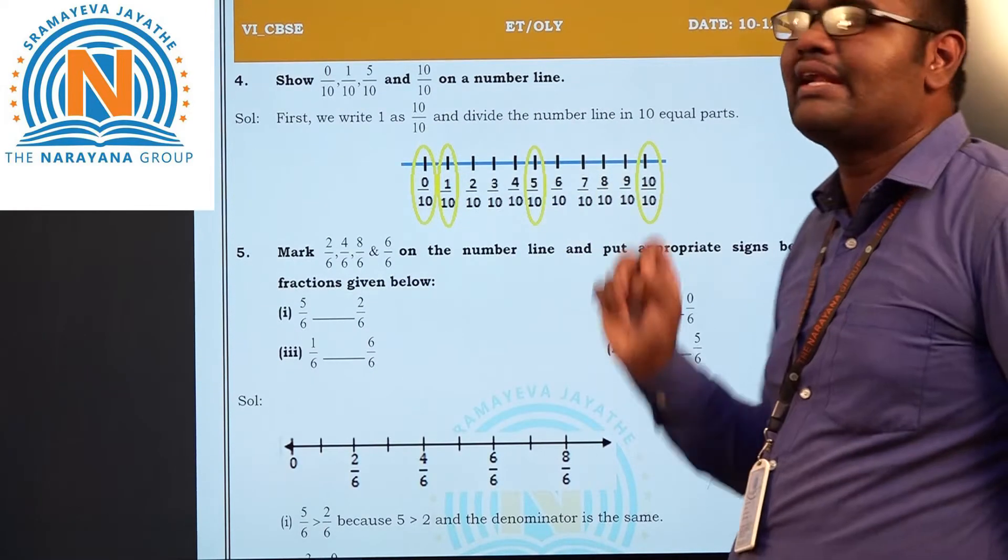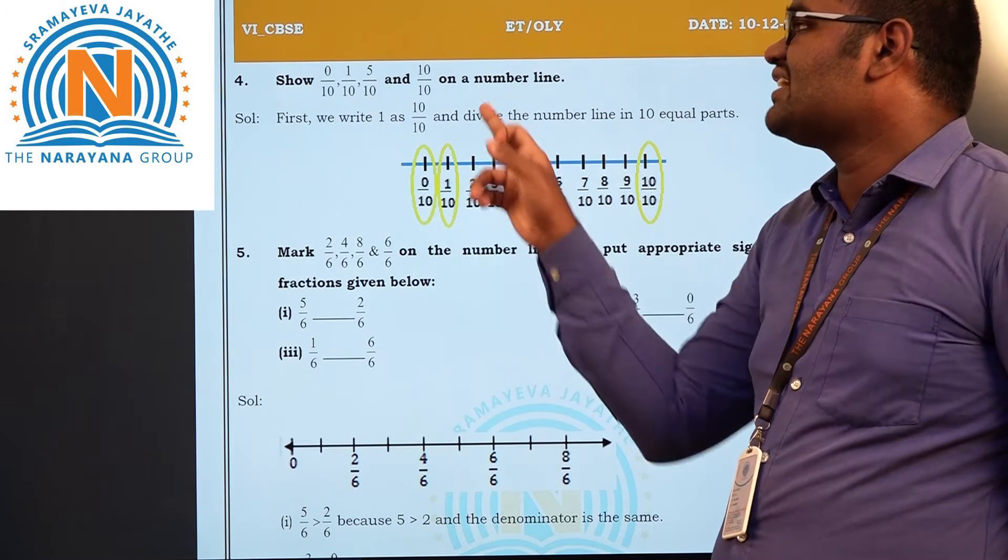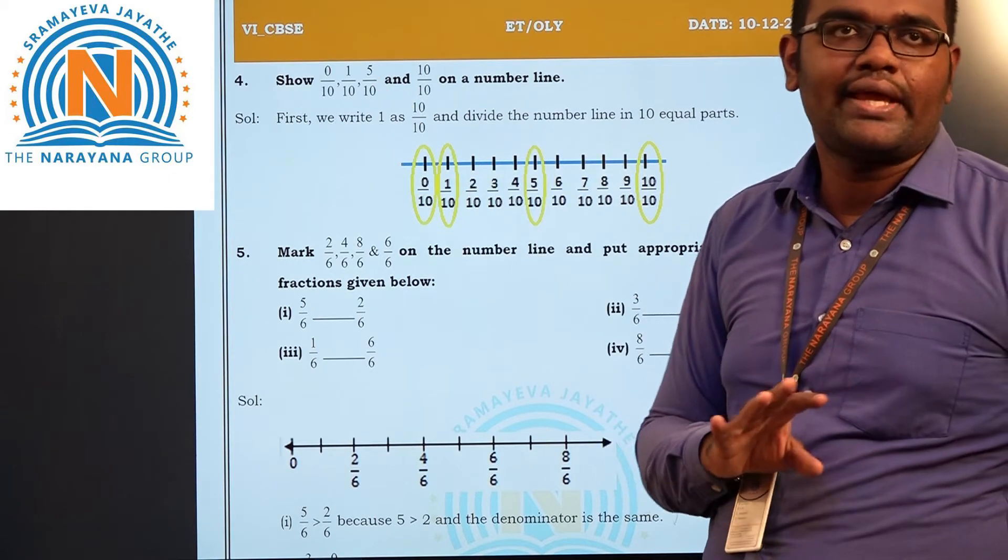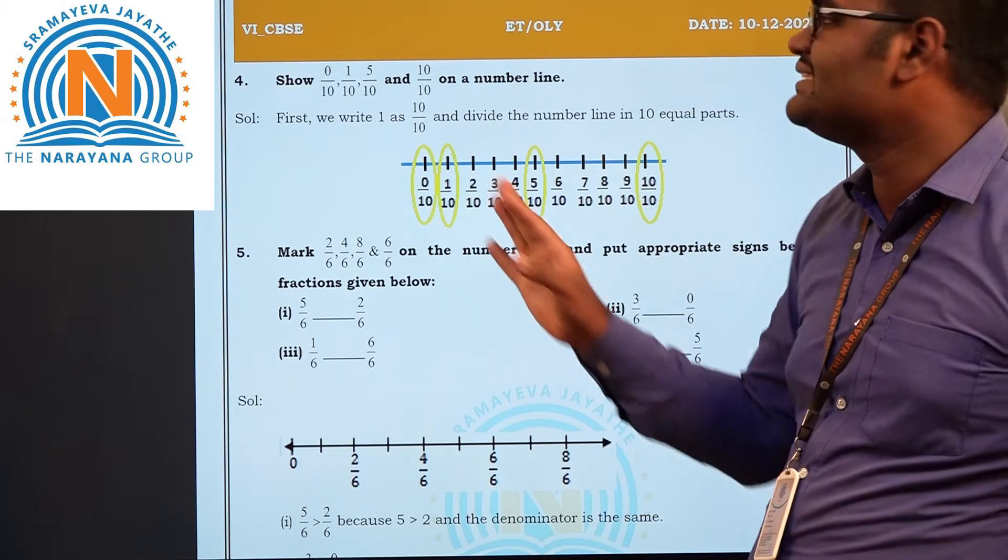Now, how to represent these numbers on a number line? Denominators are same, which will be very easy. All are 10.